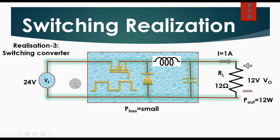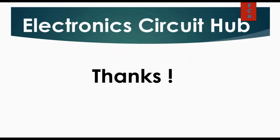So to summarize, we have a requirement to convert 24 volt to 12 volt at 1 ampere, and we have seen three methods: the resistive voltage divider method, the series pass transistor method, and the switching converter. By using the switching converter you have very low power loss. Thanks for watching this video — if you have any questions, feel free to ask in the comment section.